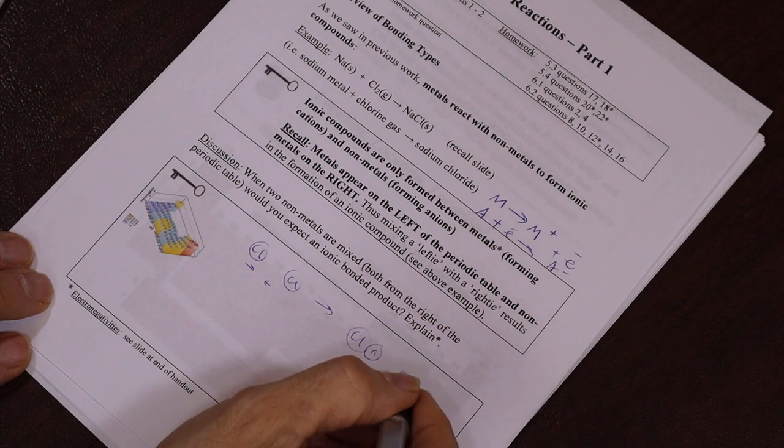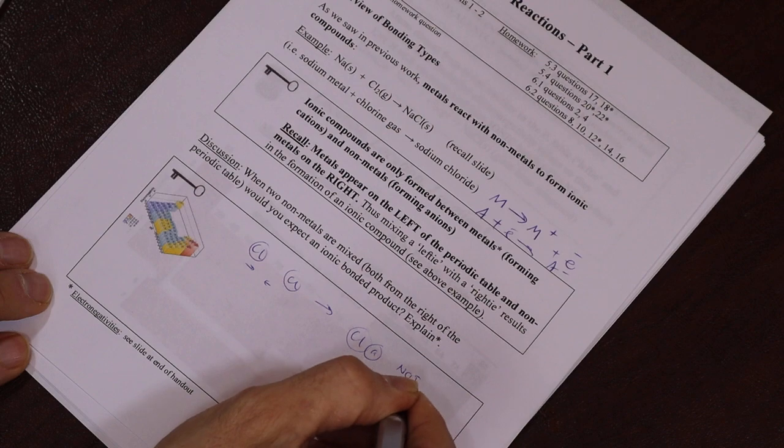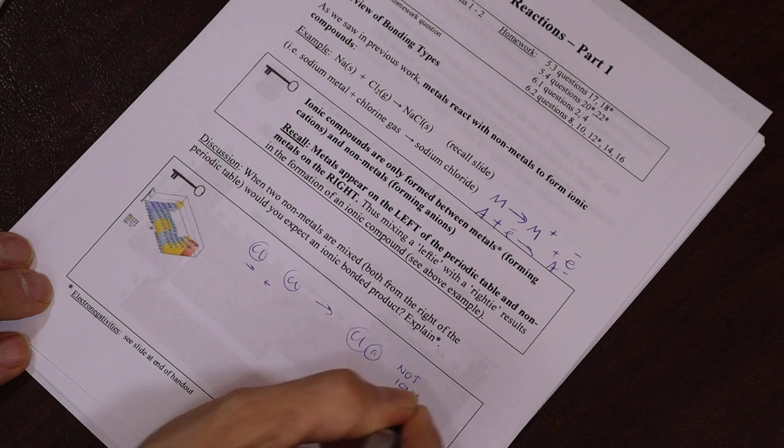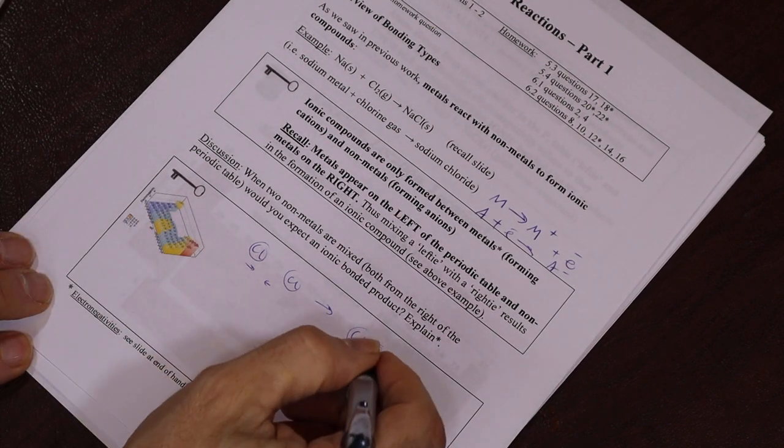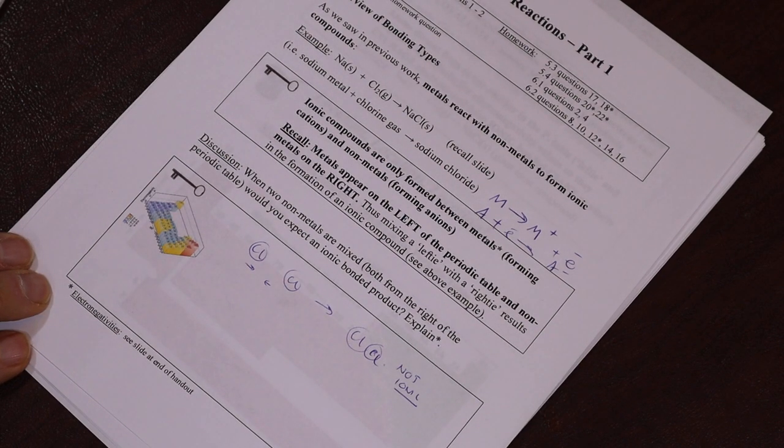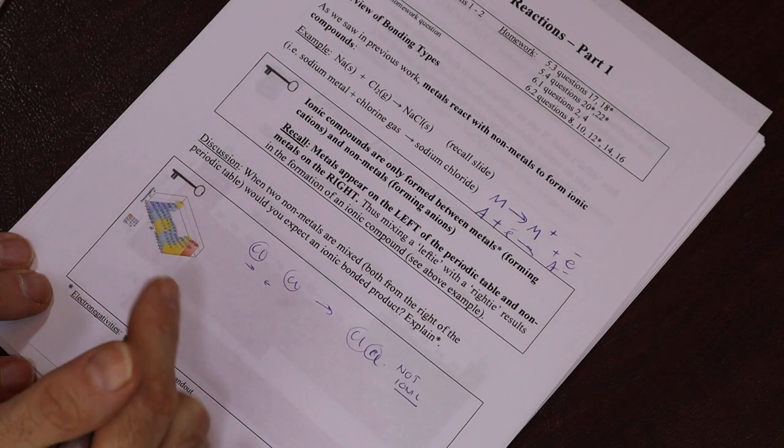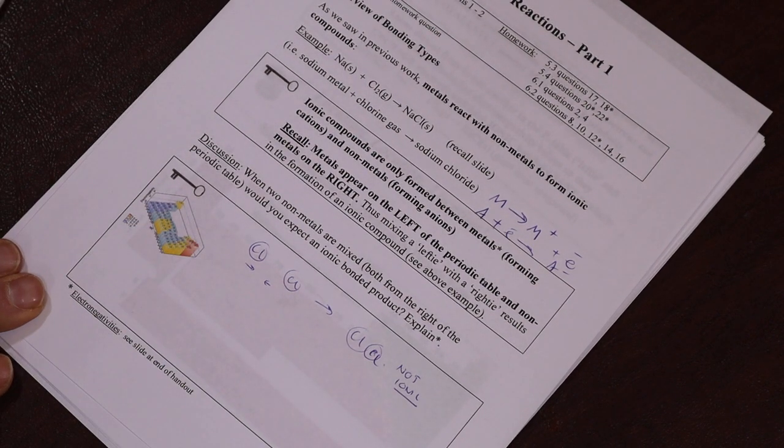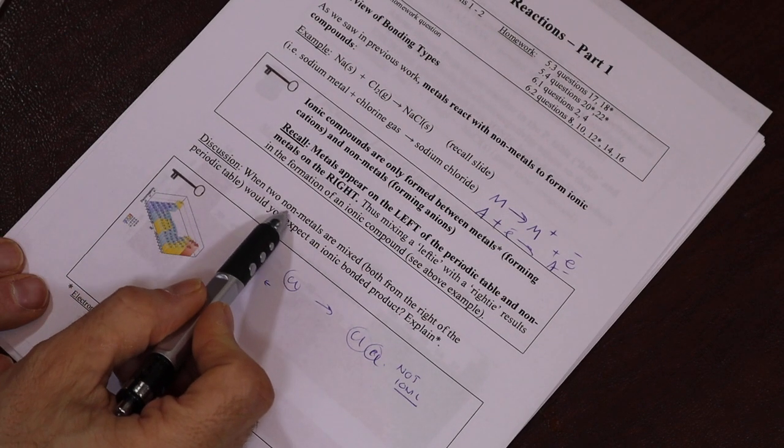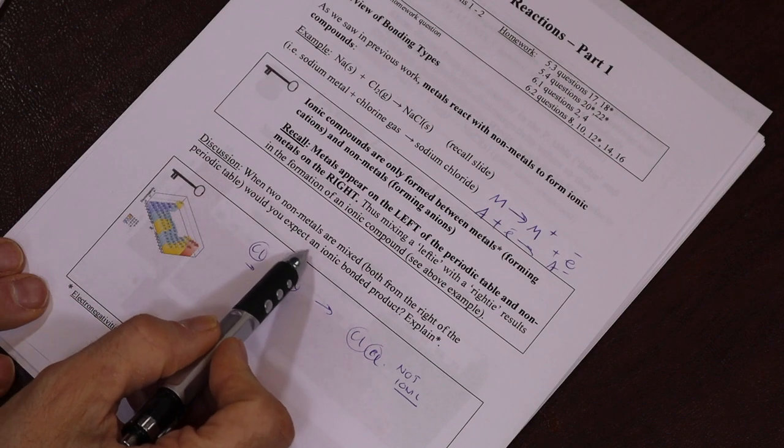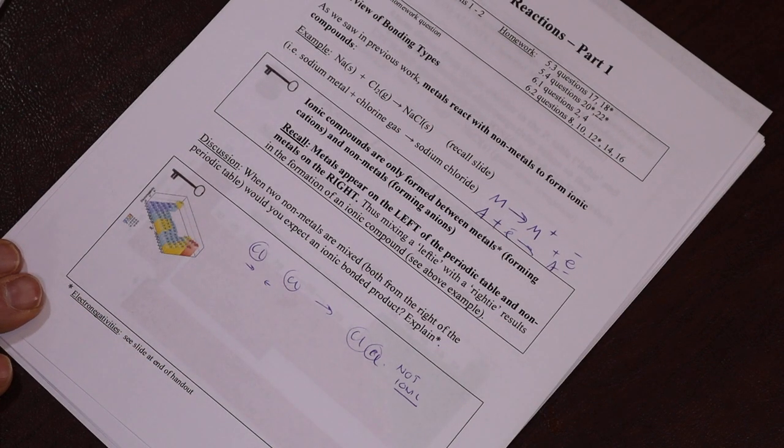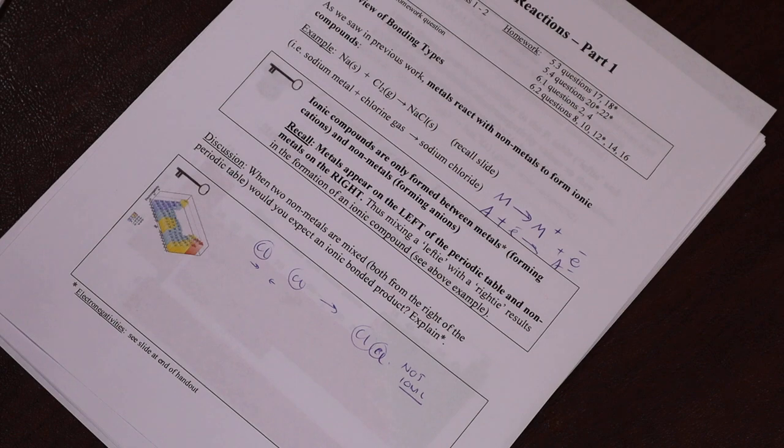The answer is no. That's not an ionic bond because they're both non-metals. Remember, a non-metal gains an electron and a metal loses. Because they both can't gain, no one wins if you like a tug-of-war. So to answer the simple question, when two non-metals are mixed, would you expect an ionic bond? Answer is no because they're both electron stealers.